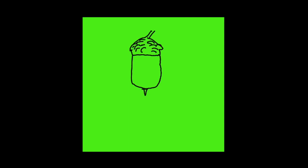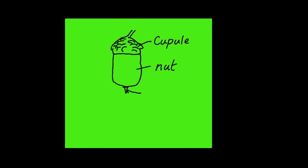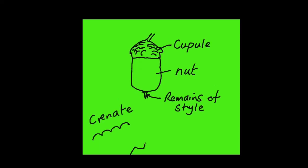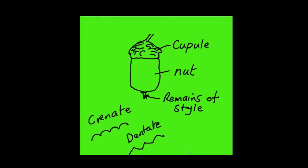This is the cupule, the little cup on the bottom of the acorn, then you've got the nut, and then the tiny remains of the style, which sometimes appears on oaks like the pin oak. If it's got a curved margin that's known as crenate, if it's slightly triangular that's known as dentate, and if it's like a serrated knife — jagged — that's serrate. Those are useful terms when identifying oaks.